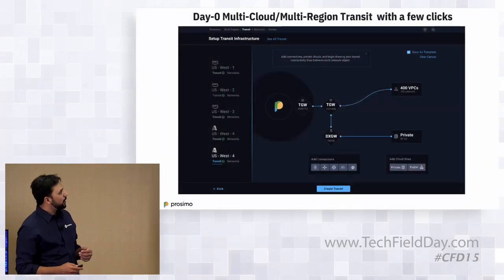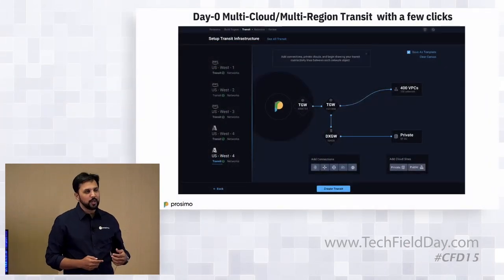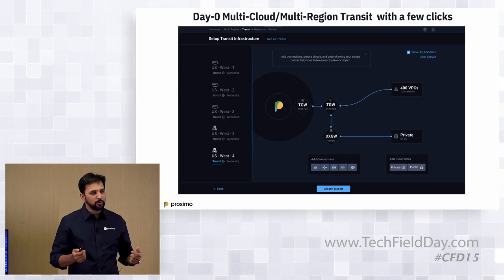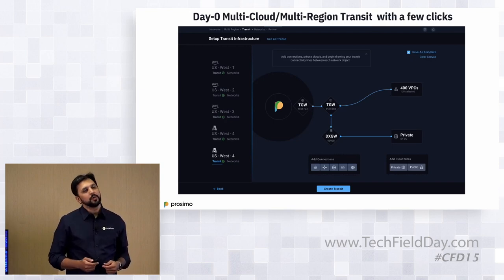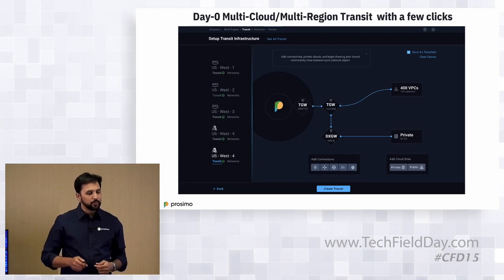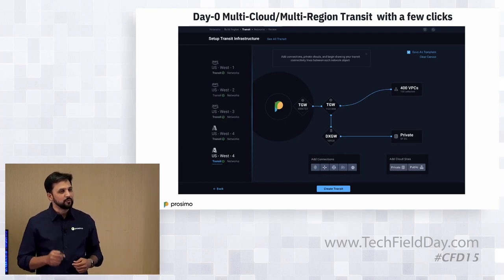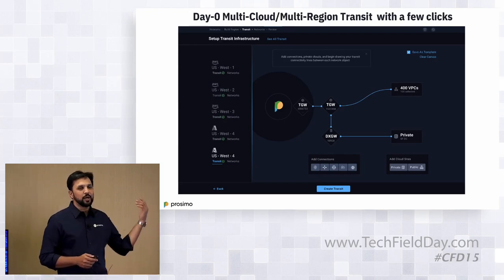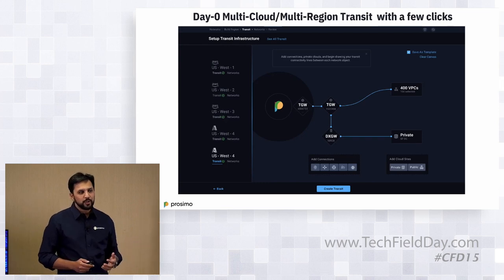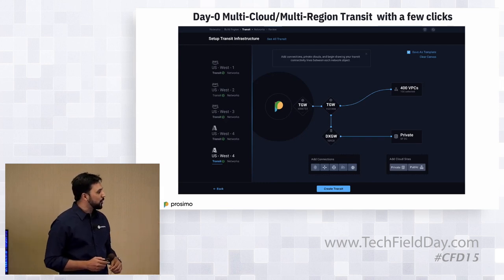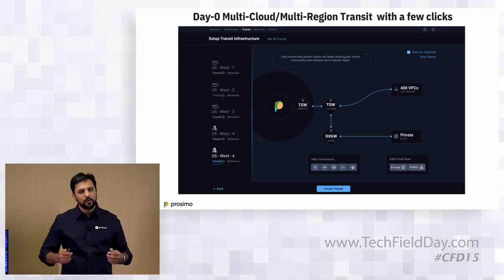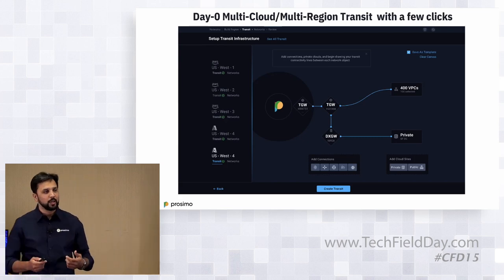As an example of day-zero multi-cloud, multi-region transit in a few clicks: you can click through, bring up a Prosimo gateway, attach it to another Prosimo gateway, orchestrate a TGW, create an attachment, and connect it to 400-plus VPCs. All of that is done through a few simple clicks — that's a quick snapshot of what you can achieve with the control plane dashboard.